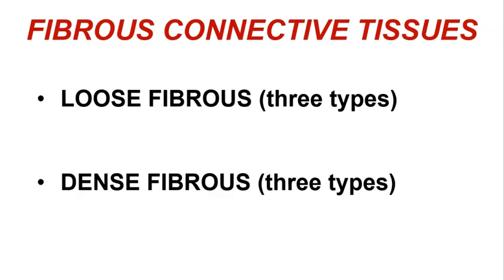The fibrous connective tissues can be further subdivided into the loose fibrous connective tissues, of which there are three types, and the dense fibrous connective tissues, also of which there are three types, giving us six types of fibrous connective tissues in total. The terms loose and dense refer to how tightly the fibers are packed together.